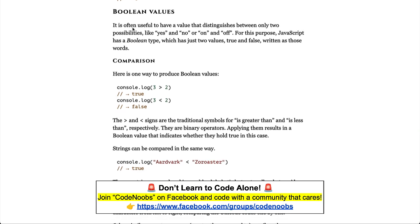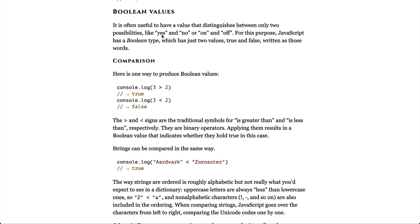Boolean values. It is often useful to have a value that distinguishes between only two possibilities, like yes and no, or on and off. For this purpose, JavaScript has a Boolean type, which has just two values, true and false, written as those words.